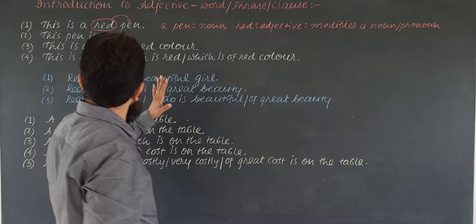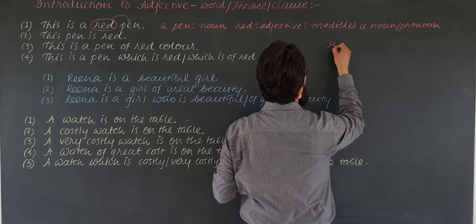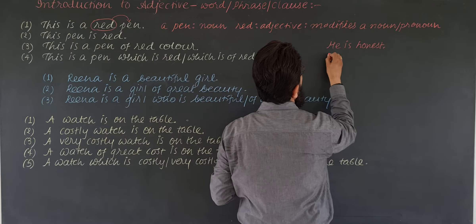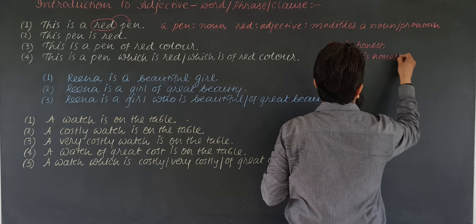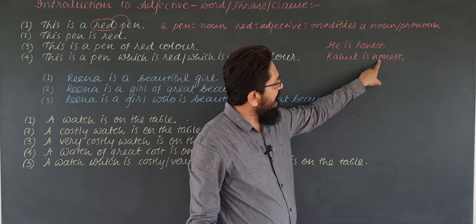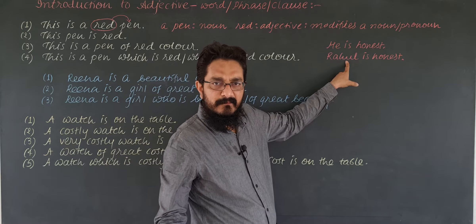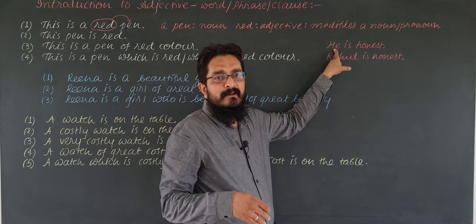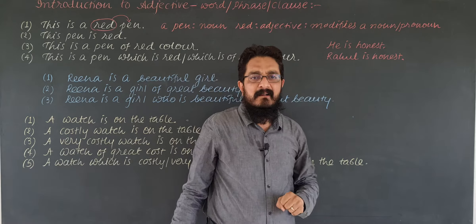For example: 'He is honest' or 'Rahul is honest.' Here adjective 'honest' modifies noun Rahul. But instead of noun you can write 'he' — he is a pronoun. Whatever you write instead of noun is called pronoun. So here honest modifies pronoun. Again it is an adjective.